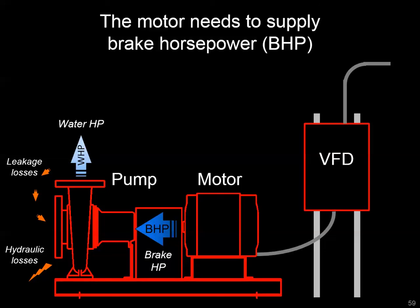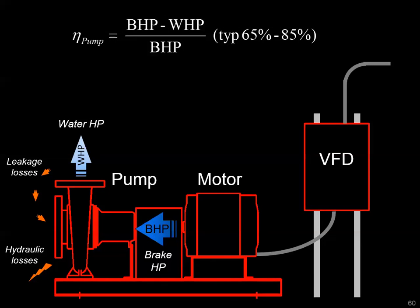A way to remember brake horsepower: it's the amount of power it would take to stop the spinning drive shaft between the motor and the pump. The difference between brake horsepower and water horsepower corresponds to the actual efficiency of the pump. Typical values you'll see on pump curves might be 65, 70, or 75 percent efficient, but it really depends on how the pump was sized and where on the pump curve it's operating — we'll look at that in a future video.